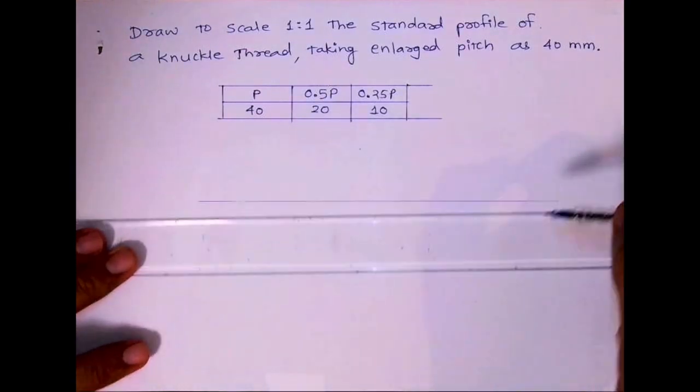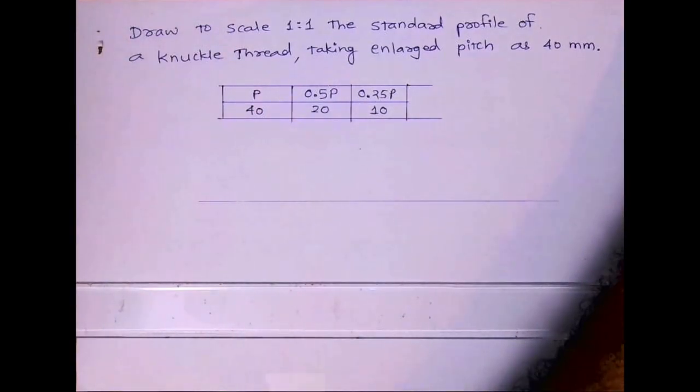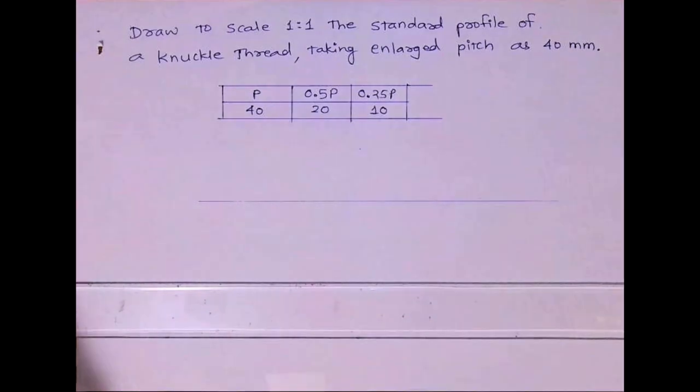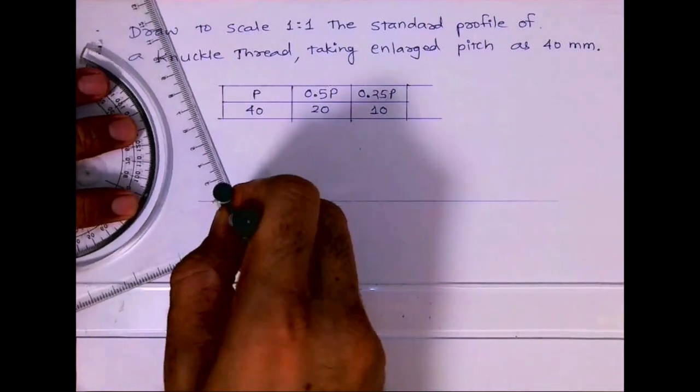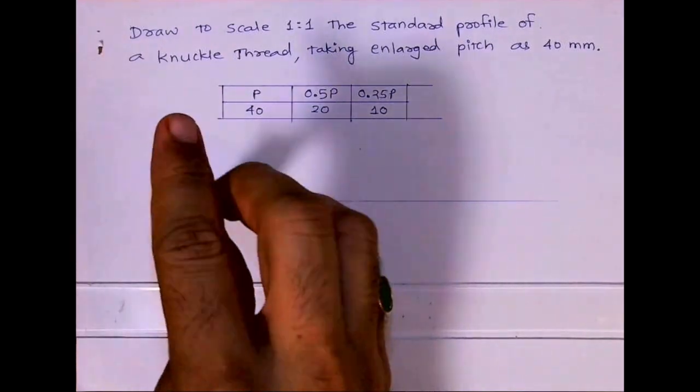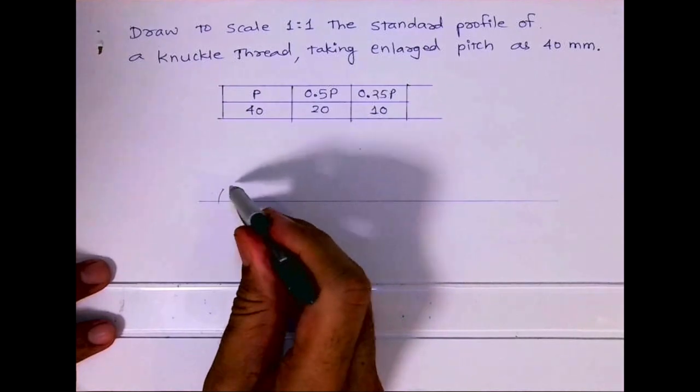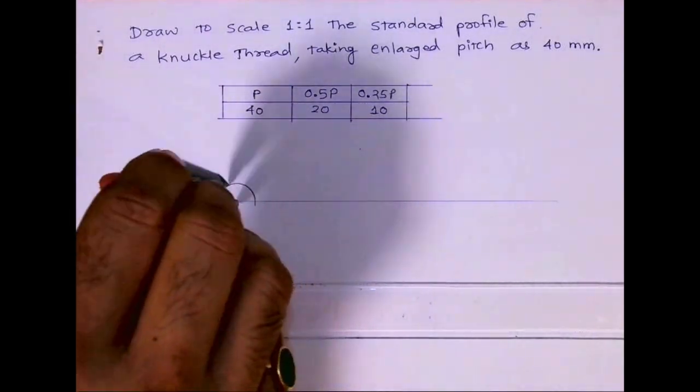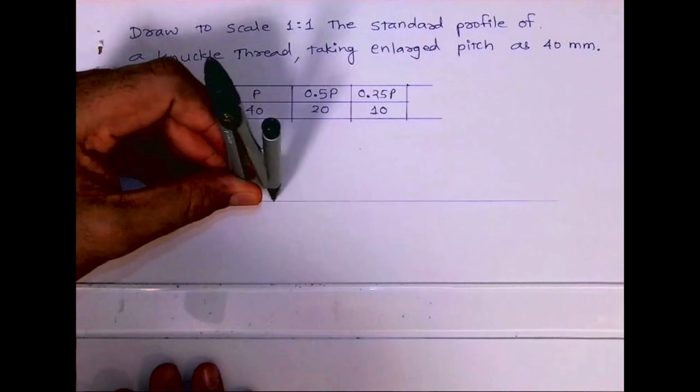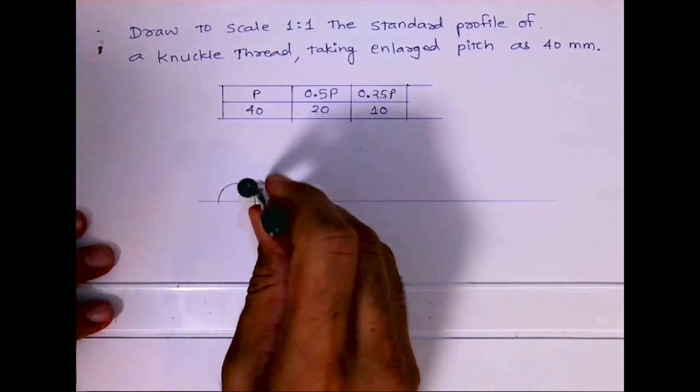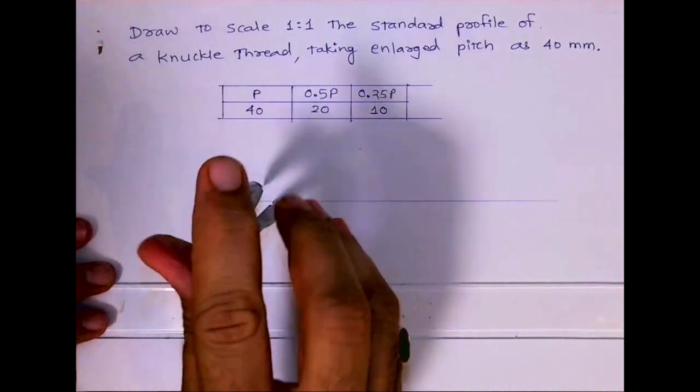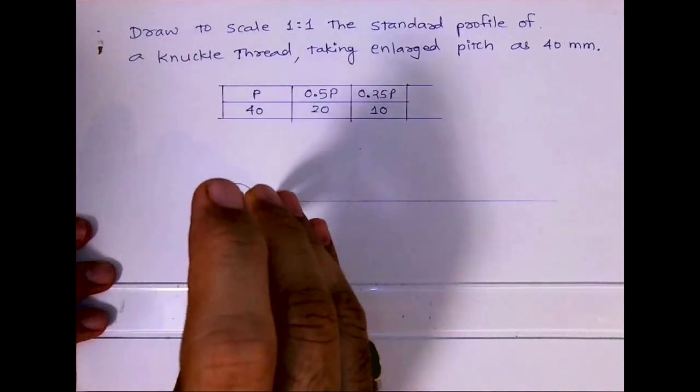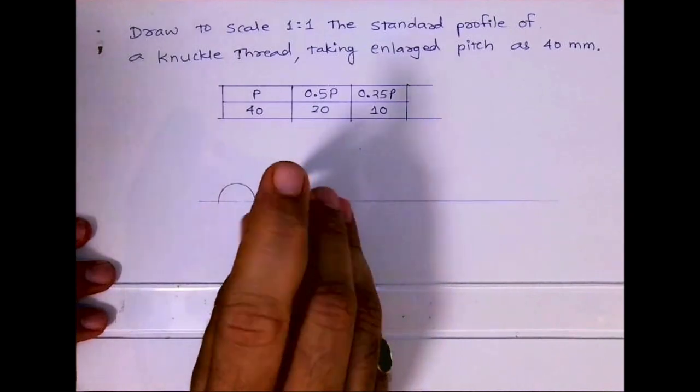See, I'll show you like this: take radius 10, keep compass over here, and draw an arc like up. Then you mark over here and then you draw down.